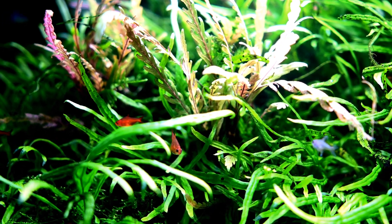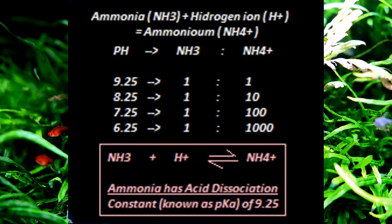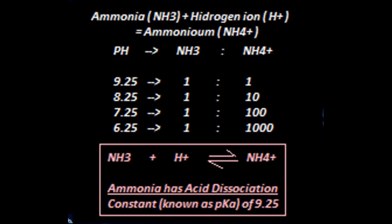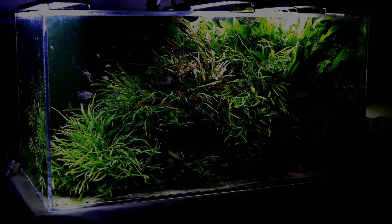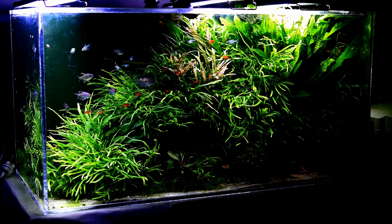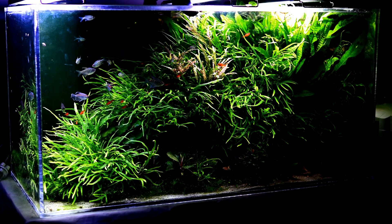Ammonia's acid dissociation constant or pKa is 9.25. On screen you can see that in water at pH 9.25 the toxic ammonia to non-toxic ammonium ratio becomes 1 to 1. At pH 8.25 it becomes 1 to 10, and at pH 7.25 it becomes 1 to 100. Even at pH 6.25 the toxic ammonia to non-toxic ammonium ratio becomes 1 to 1000. So if your aquarium pH stays below 7.25 the chances of your fish dying due to ammonia poisoning becomes very less. Unless your tank is filthy dirty and you haven't cleaned it for a decade, your fish should not die due to ammonia poisoning.